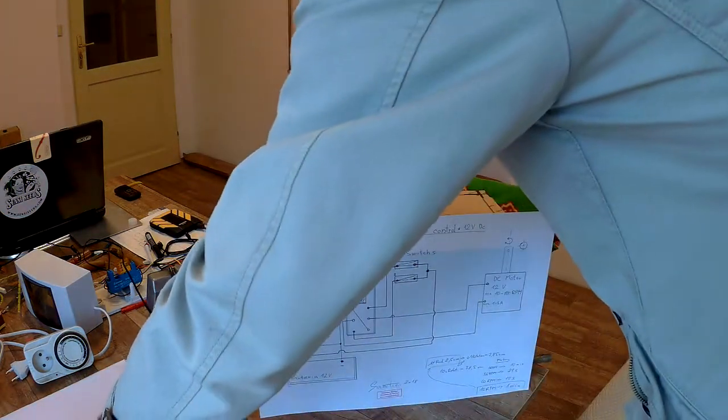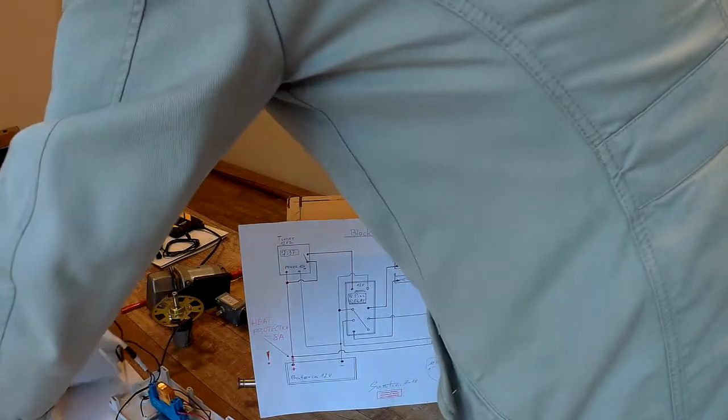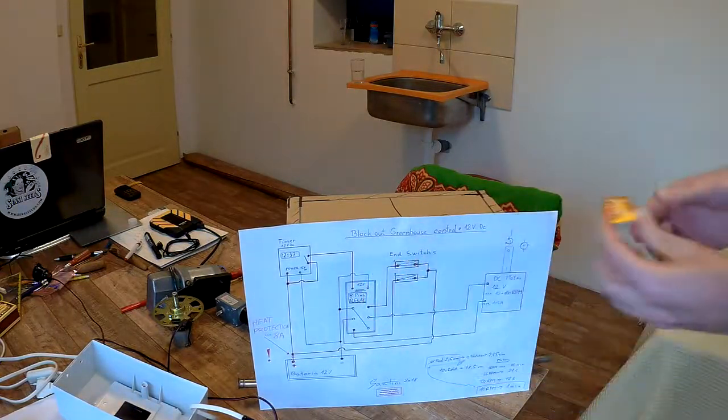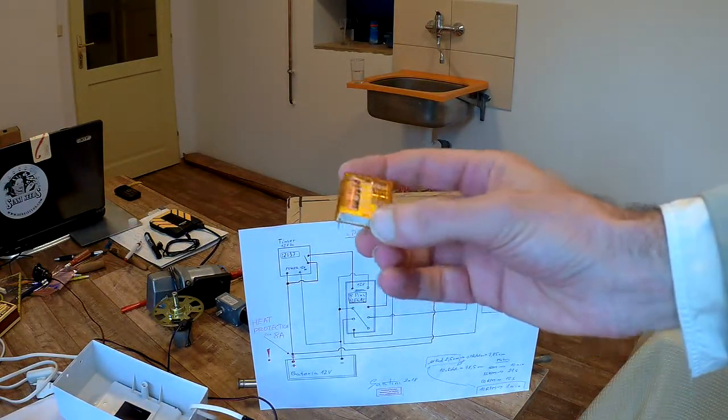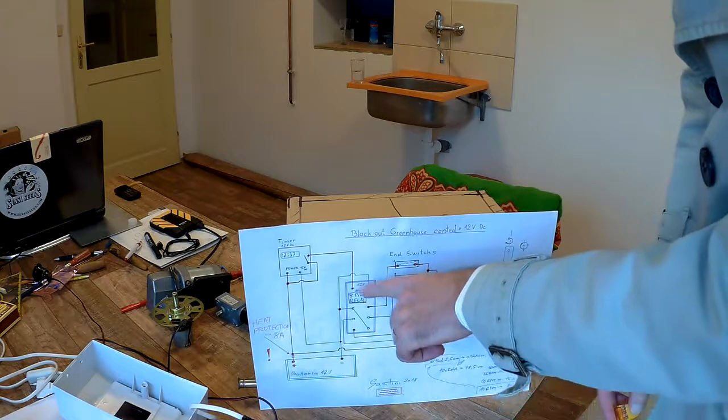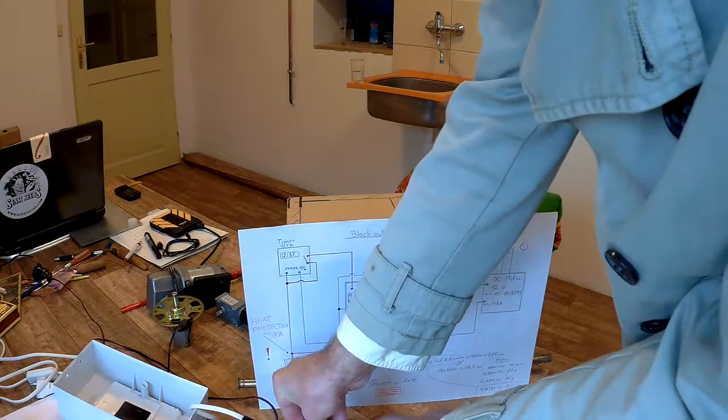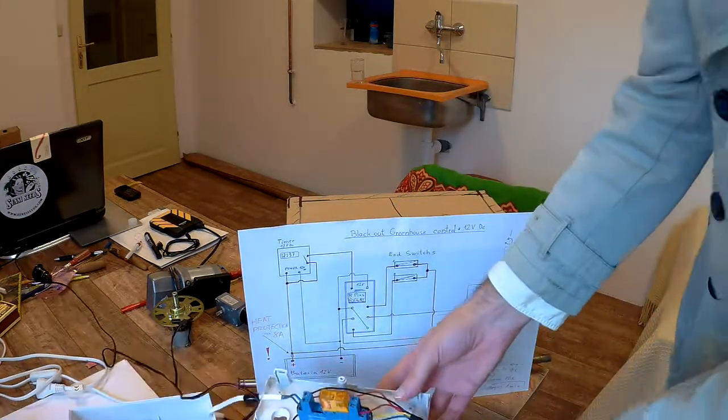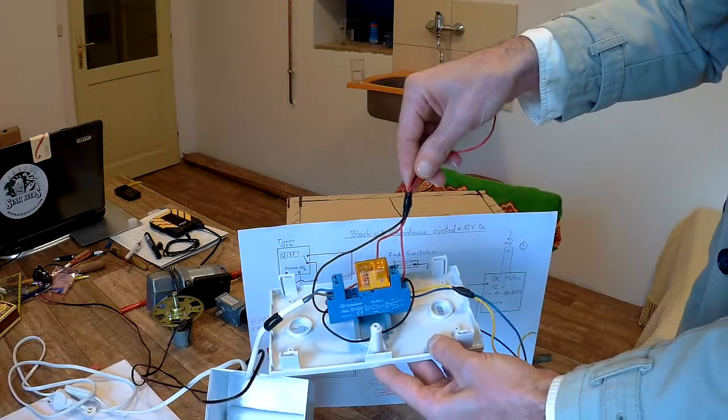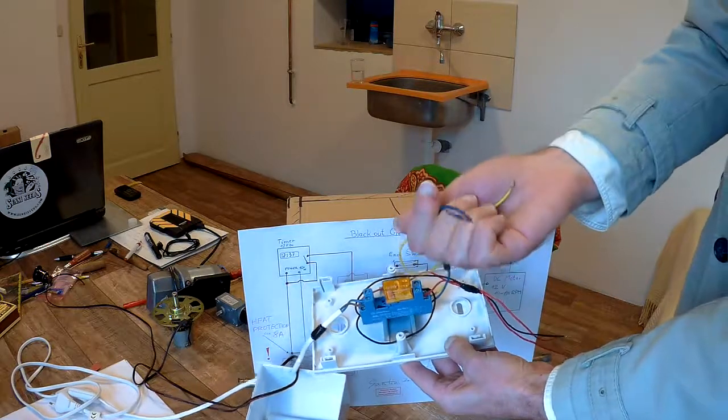If we want to use 220V, 12 volts, I have one system here. I can show you. So the relay is the same, looks like the same but it's different color. But it's for 200 volts. Here you see this is the power of the relay.